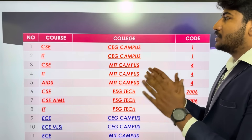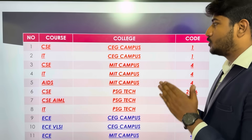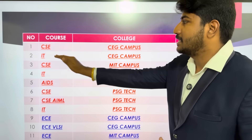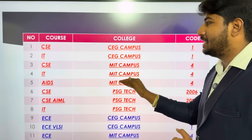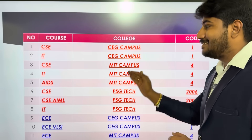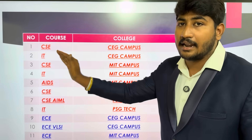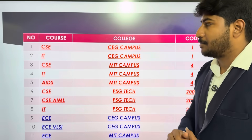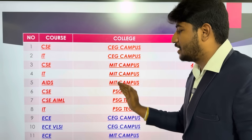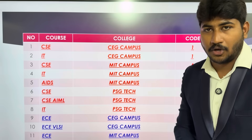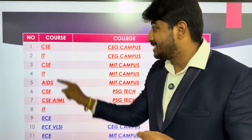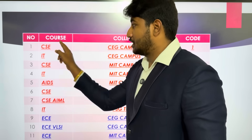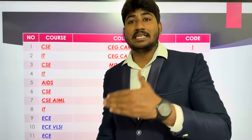So, computer-centric courses — how do you choose the choice filling in this method? CEG Campus, Counseling Code 1, Computer Science IT department — first try. This is the MIT campus CSIT. This is AI Data Science and CC. That is PSG Tech — CSE, CSA, AI Data Science, and IT department. This is the set of colleges we try. CSE and IT department.